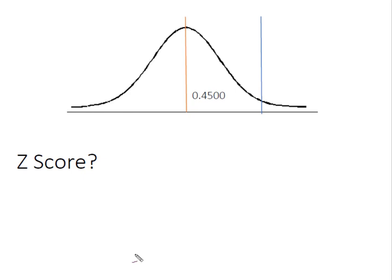It's also possible to work from the inside out. I have a normal curve and I know that between the mean and this point on the curve, I have 0.4500 or 45% of my data. Now I want to know how many standard deviations above the mean do I need to go in order to have 45% of my data fall between the mean and this point on the curve.